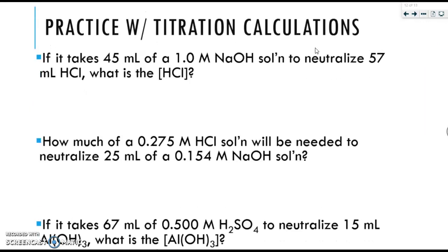Let's do the first one together. It says, if it takes 45 milliliters of a 1.0 molar NaOH solution to neutralize 57 milliliters HCl, what is the concentration of HCl? So we notice we have 1 OH and 1 H, so we can use M₁V₁ because it's a 1 to 1 ratio.